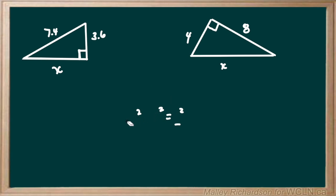Now that we know the formula, let's get to our first example. We have 7.4 as our longest side across from our right angle, and then we have 3.6 and x. Let's write our formula: a squared plus b squared equals c squared.